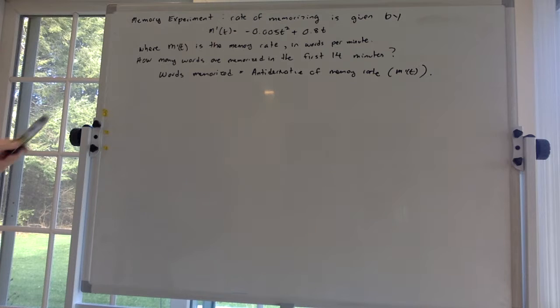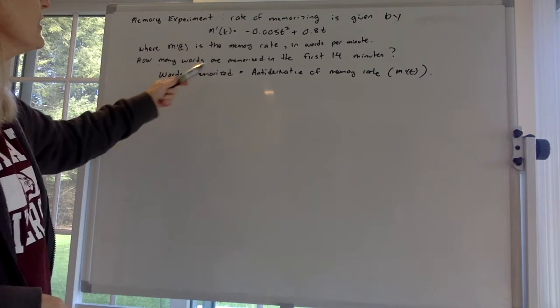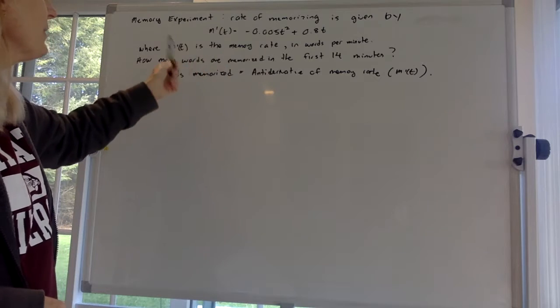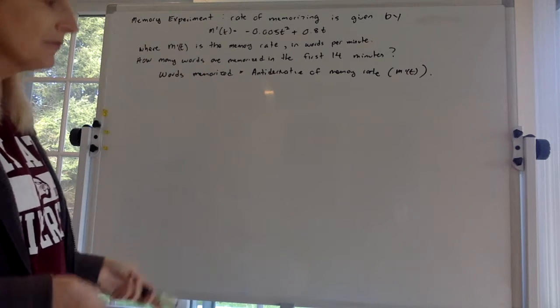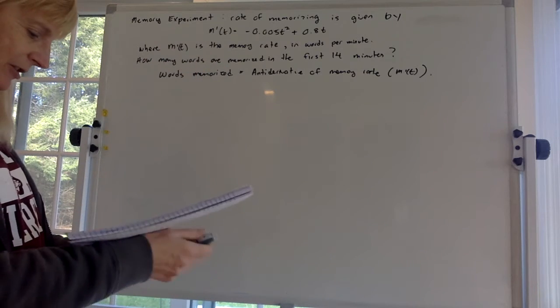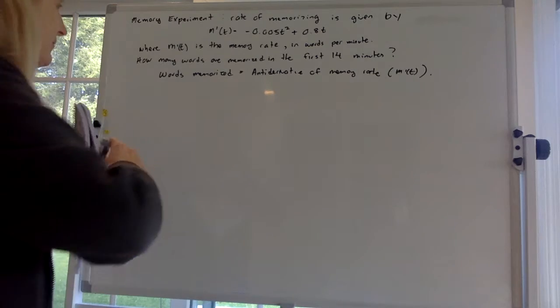So the first thing you've got to realize is the words memorized is the antiderivative of the rate. So we basically just have to find the antiderivative of m'(t). So how do we find the antiderivative? We integrate.